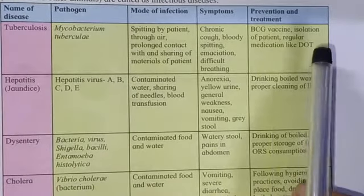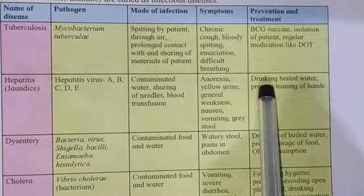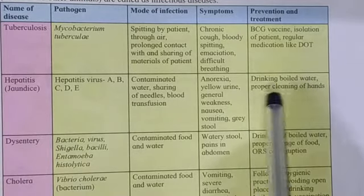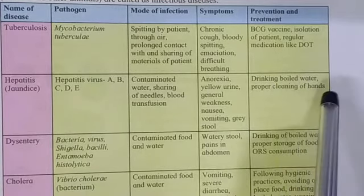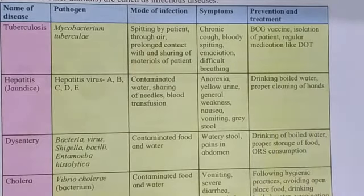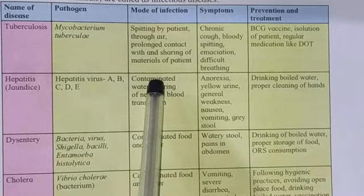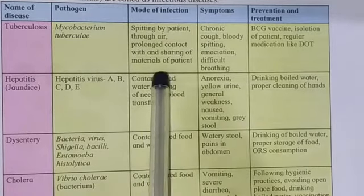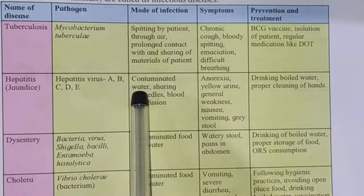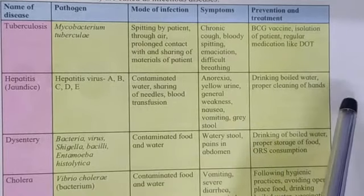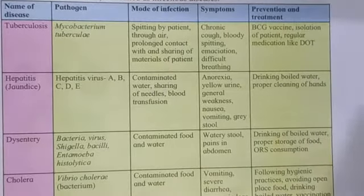How can hepatitis be prevented? It can be prevented by drinking boiled water and by proper cleaning of the hands. If you drink boiled water you may not get jaundice, because it passes from one person to another through contaminated water. And proper cleaning of hands prevents the virus from entering the body.